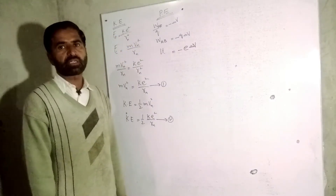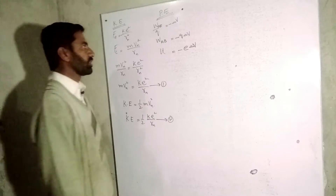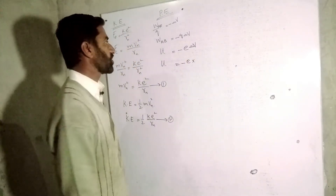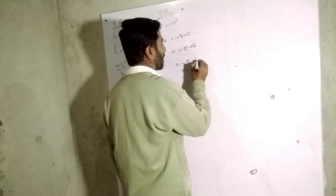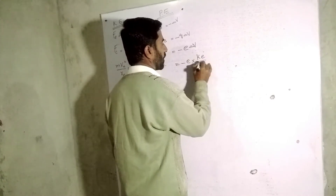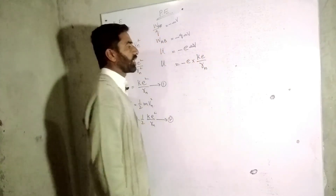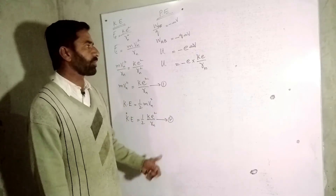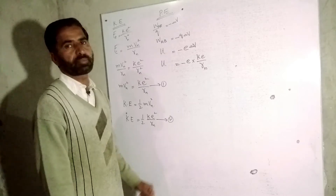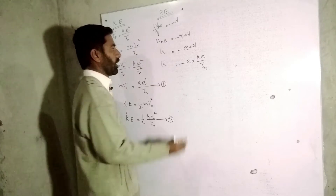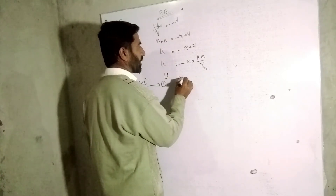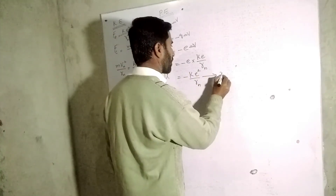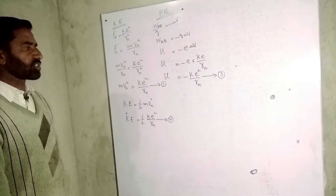Here we used e as the magnitude of charge on an electron. The electrostatic potential relation discussed in chapter 12 is V = ke/r. Substituting e in place of q and rn in place of r (where n refers to the nth orbit), multiplying gives: u = −ke² over rn. This is equation number 3, the potential energy relation.